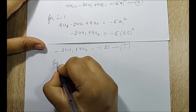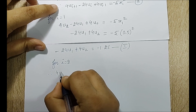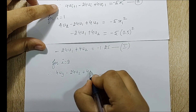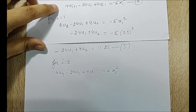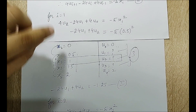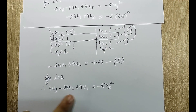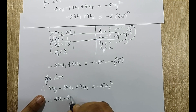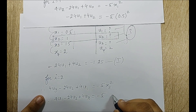For i = 2: substituting gives 4u₃ − 24u₂ + 4u₁ = −5·x₂². From the table, x₂ = 1, so the right-hand side is −5·1 = −5. This gives 4u₁ − 24u₂ + 4u₃ = −5, marked as equation 2 (system).